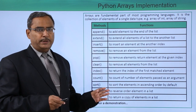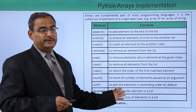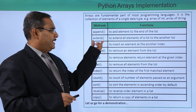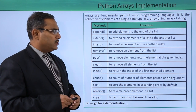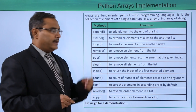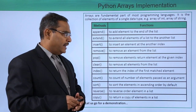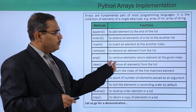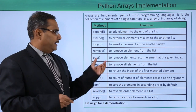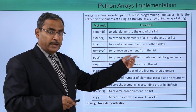Here we are having the methods which will be operated on arrays and the respective functions and descriptions. Append to add element to the end of the list. Extend to extend all elements of a list to another list. Insert to insert an element at a given index. Remove to remove an element from the list. Pop to remove and return the element at the given index.